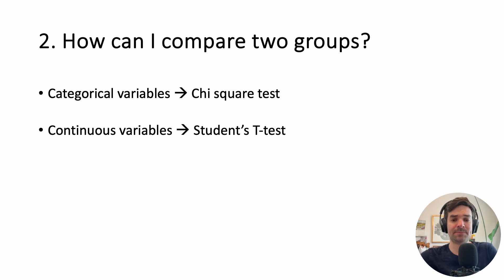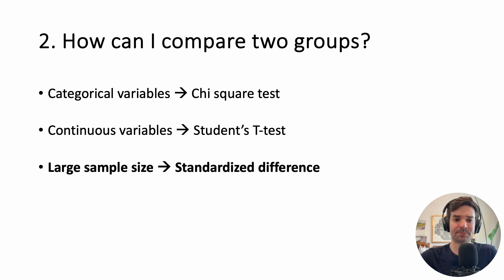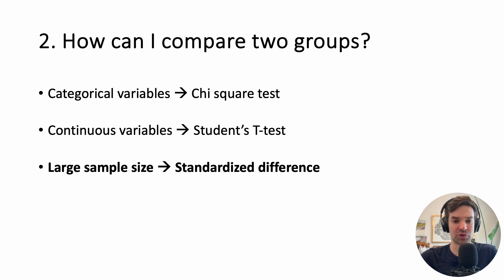If your study has a very large sample size, you'd want to report standardized differences instead, and there are online formulas for that. There's no magical cutoff for how big is really big — maybe more than 5,000 or 10,000 people.